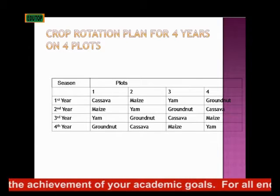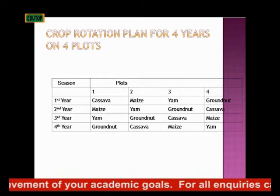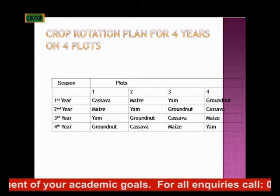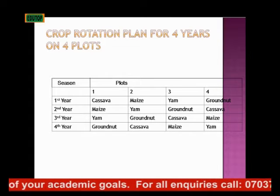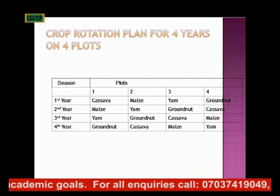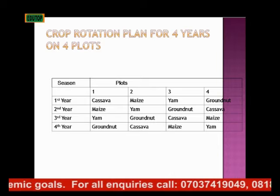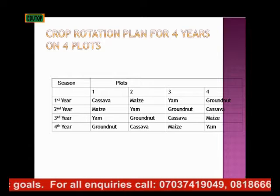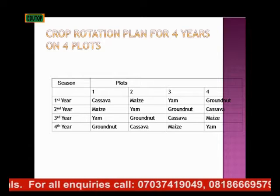Then in the second year, you plant maize in your first plot, yam now in the second plot, groundnut in the third plot, then cassava in the next plot.